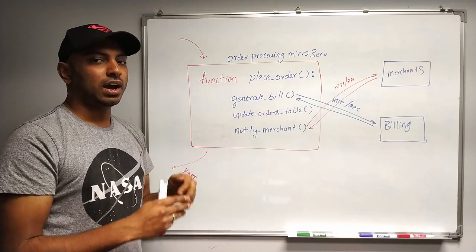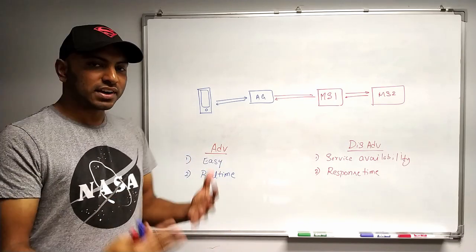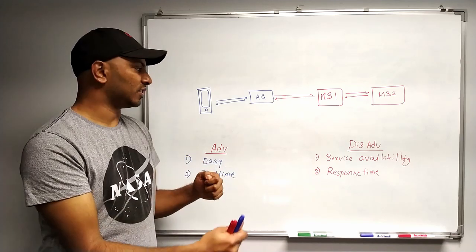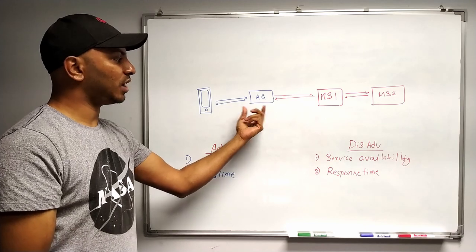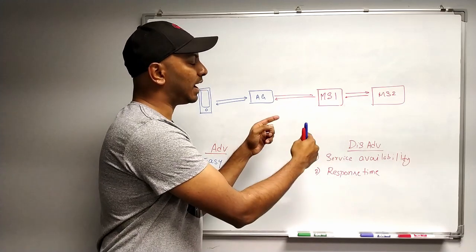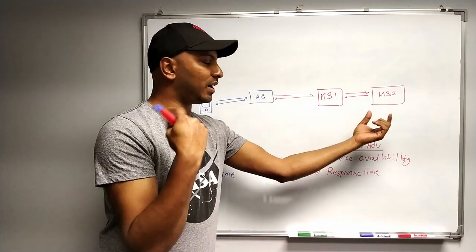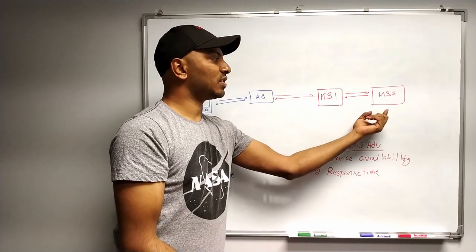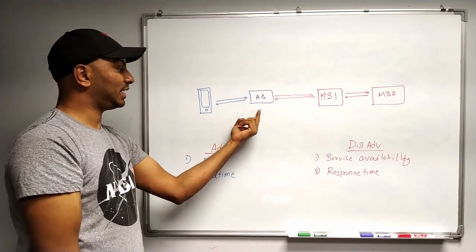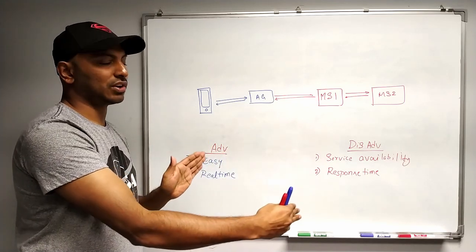Let's understand what synchronous inter-microservice communication is. The client makes a call to the API gateway, which calls microservice one. Microservice one needs some data from microservice two, so it makes a synchronous call in real time over REST or RPC, and waits until microservice two returns a response. Then it does whatever processing it needs to do, returns the response to the API gateway, and the API gateway returns it to the client.